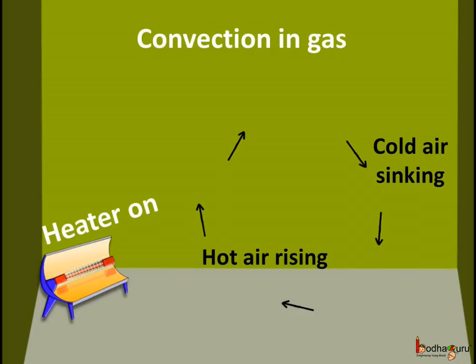Convection occurs in gases too. When we turn on an electric heater, it heats the air near it. The hot air rises up and the colder air near the ceiling sinks down. That cold air gets heated and then it rises up, and again some colder air comes down from the top. Thus, air circulates and heat is transferred by the process of convection.